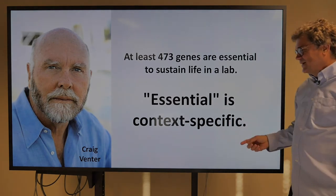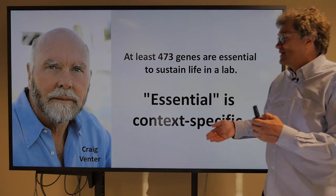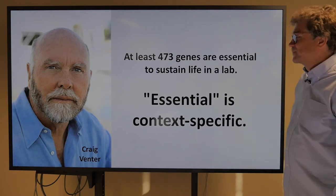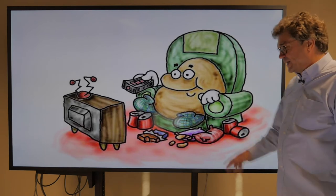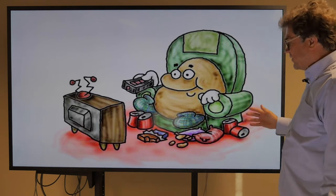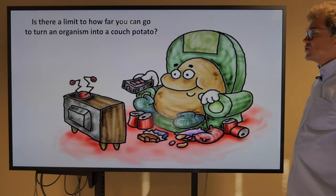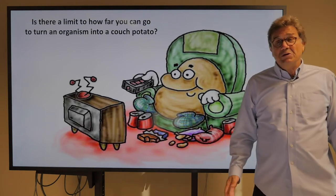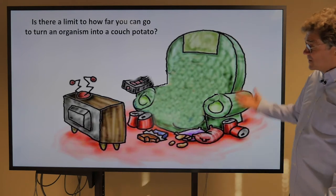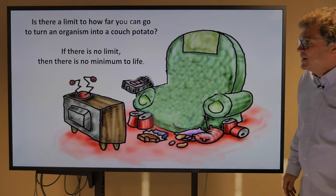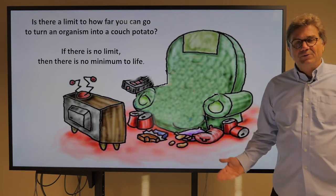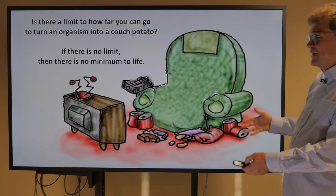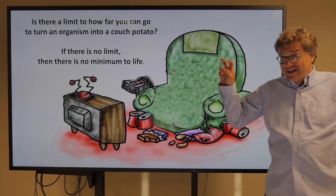The problem is 'essential' is context-specific — whether they can be sustained depends on how well you feed these couch potato bacteria. You don't need legs, arms, or eyes if you just feed this thing and help it reproduce. So is there a limit to how far you can go turning an organism into a couch potato? If you provide everything to it, what does it need anything for? If there is no limit to how much stuff you can provide in the environment, then there's no limit to how minimal you can make the life form that can be sustained.